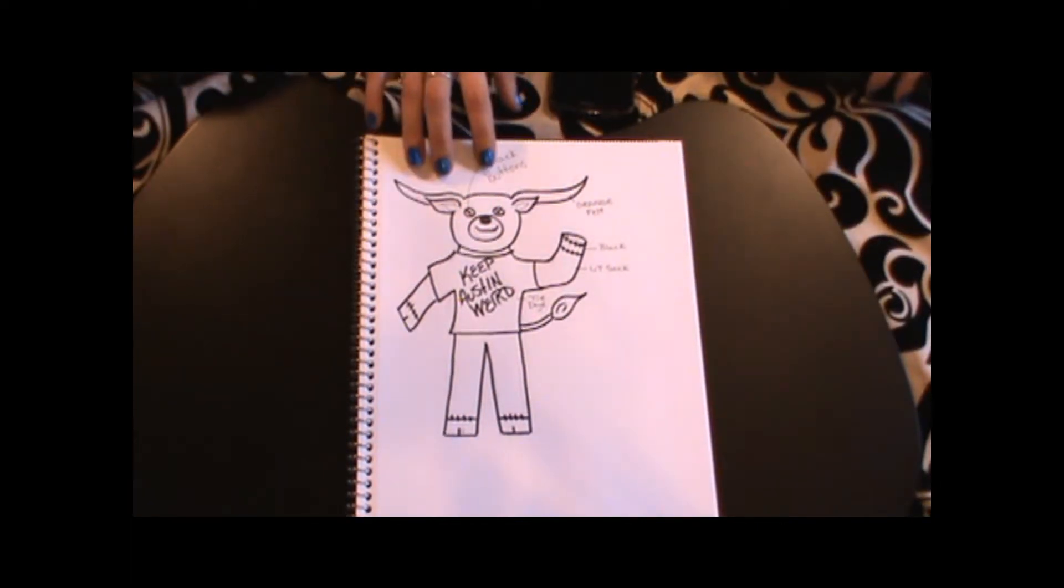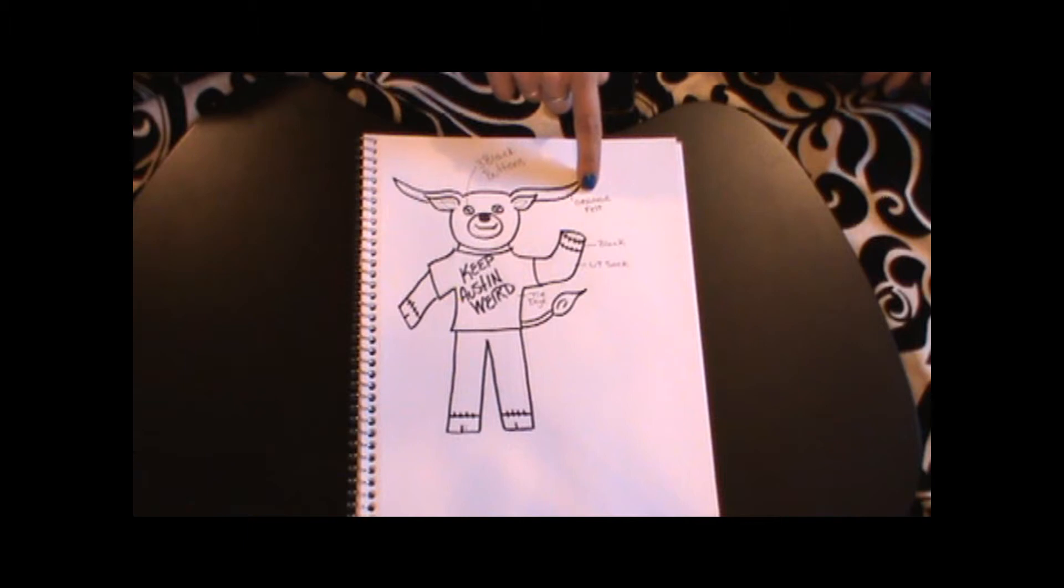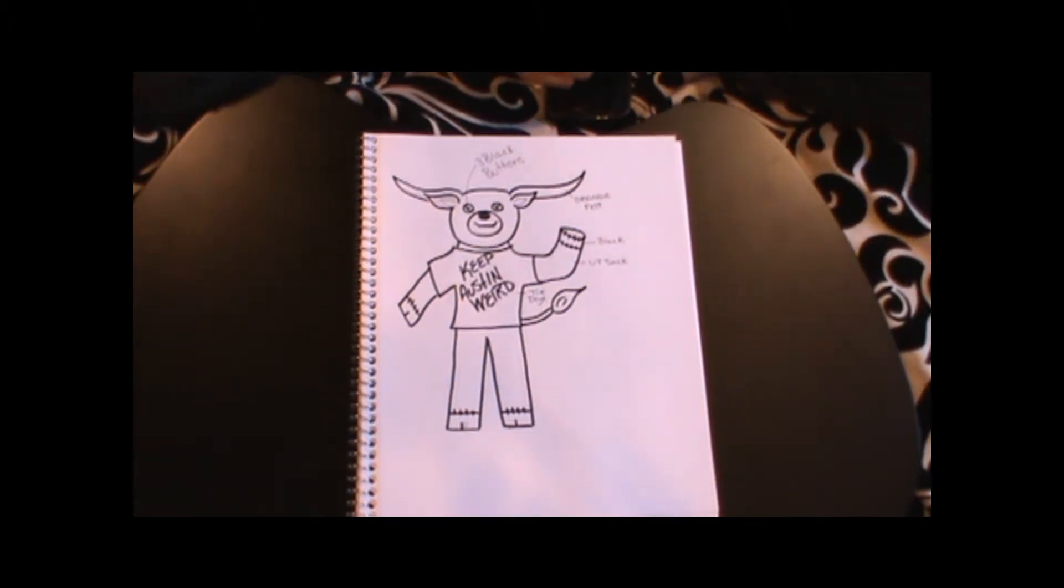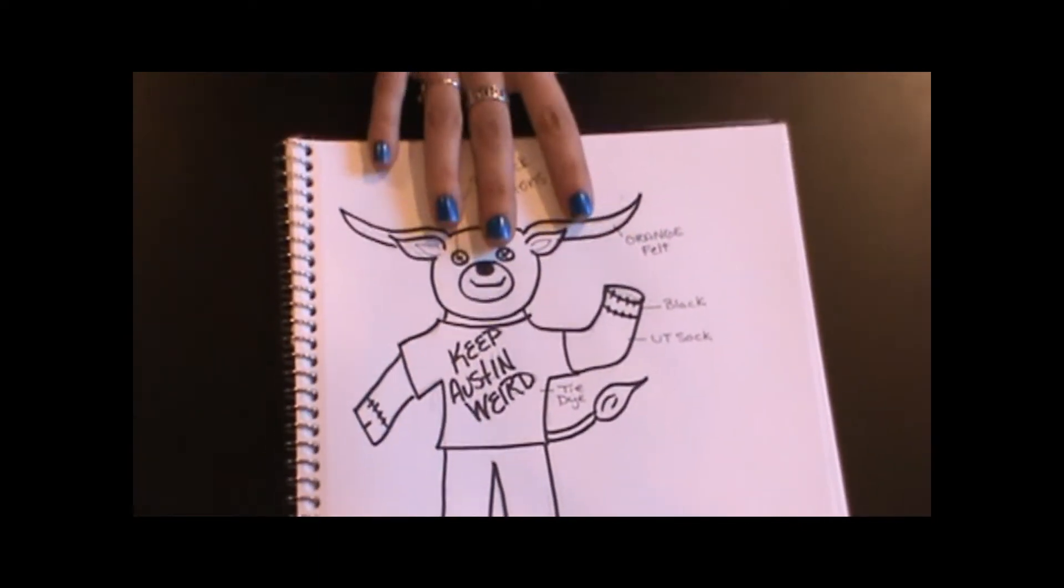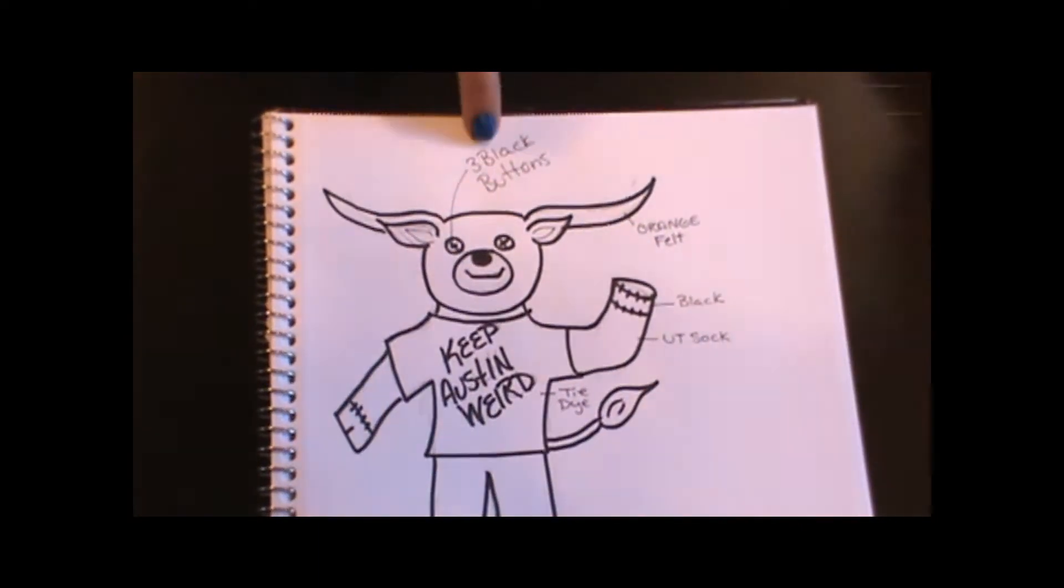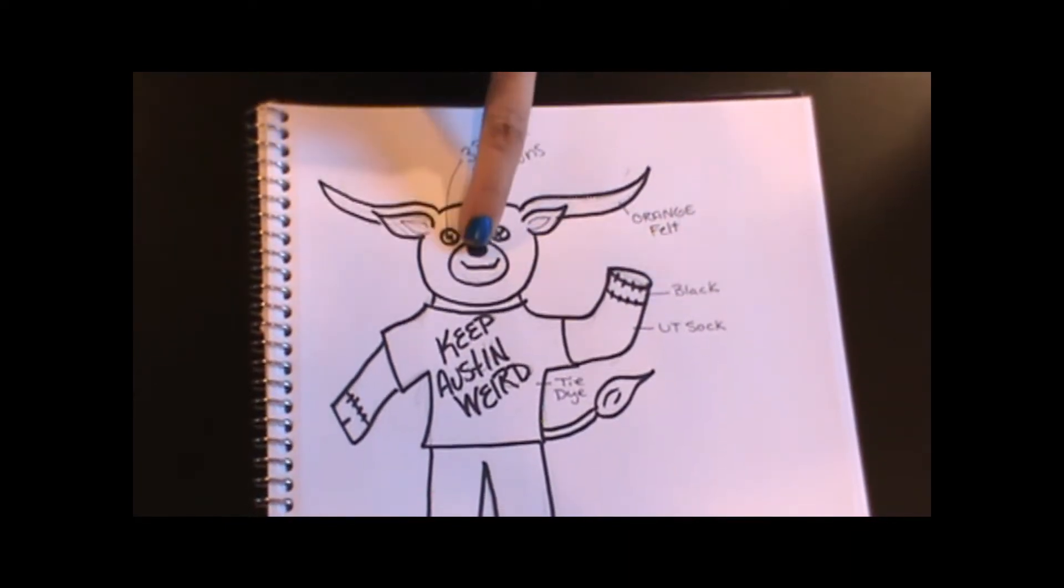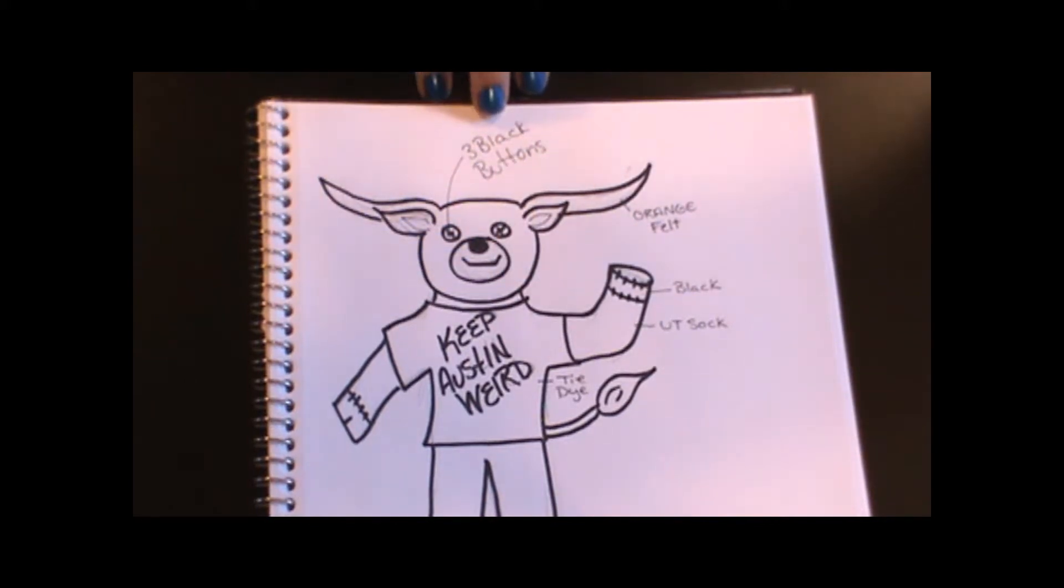Okay, so what I've done is you should have your sock creature, but I've gone ahead and labeled the different fabrics that I'm using. Let's see if I can zoom in. If you look a little closer, I've identified I definitely need three black buttons - two for his eyes, one for his nose. I'm gonna make a muzzle right here based on my drawing.